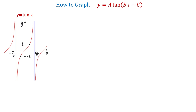To understand how to graph a variation of the tangent function, first we'll review the graph of the basic tangent function. As you see in the graph of y equals tangent of x, the two closest asymptotes to the origin are at negative pi over 2 and positive pi over 2. So we can say that the function completes one period as x changes from negative pi over 2 to positive pi over 2.